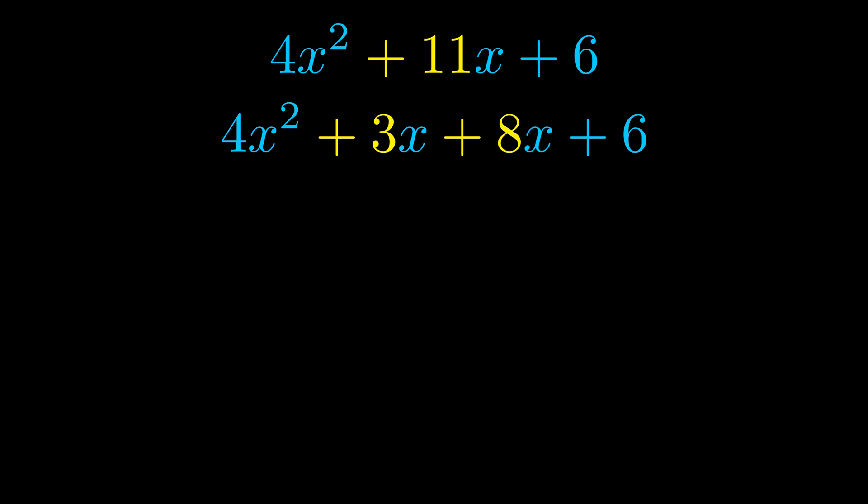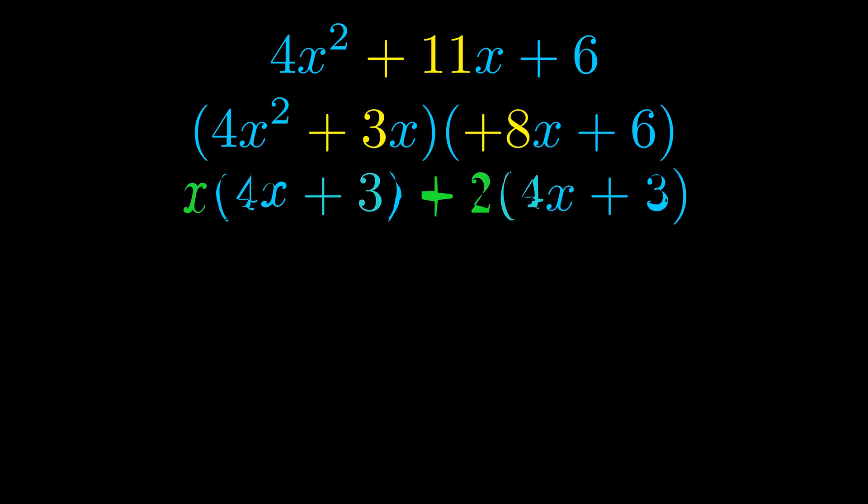Once we've done this we go ahead and put parentheses around the first term and the last term. And we do that so that we can take the greatest common factor out of both terms. We can see the greatest common factor is now outside in green.